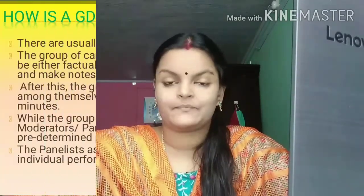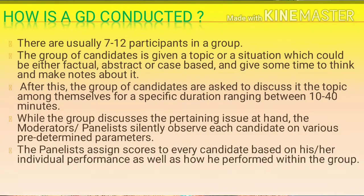When conducting a group discussion, a minimum of 7 participants is needed — usually 7 to 12 participants. The group of candidates is given a topic or situation which could be either factual, abstract, or case-based, and they are given some time to think and make notes about it. So initially, the firm or educational institution gives a topic, and based on that topic, some time is given to think and discuss within the group. This is the normal process used in conducting a group discussion.